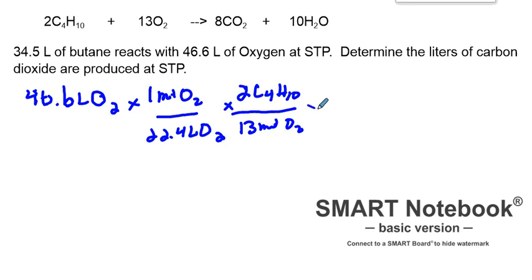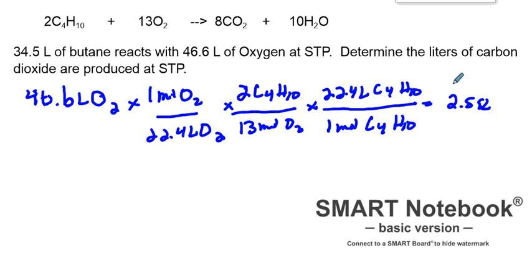And then times that by 22.4 liters of butane over one mole of butane. And that comes out to be 2.59 liters. That, of course, is of our butane C4H10.